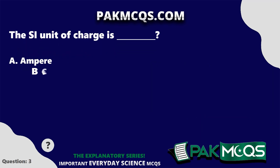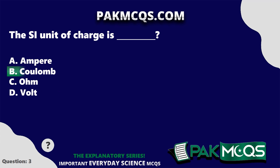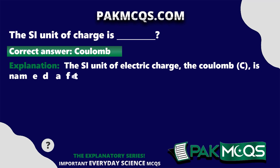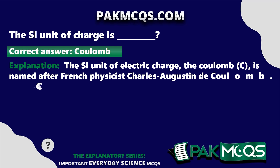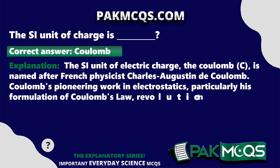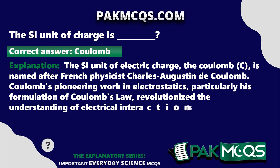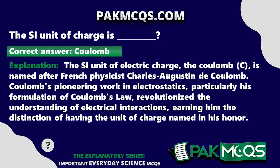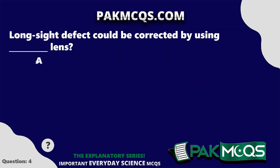The SI unit of charge is? Coulomb. The SI unit of electric charge, the coulomb (C), is named after French physicist Charles Augustin de Coulomb. Coulomb's pioneering work in electrostatics, particularly his formulation of Coulomb's Law, revolutionized the understanding of electrical interactions, earning him the distinction of having the unit of charge named in his honor.